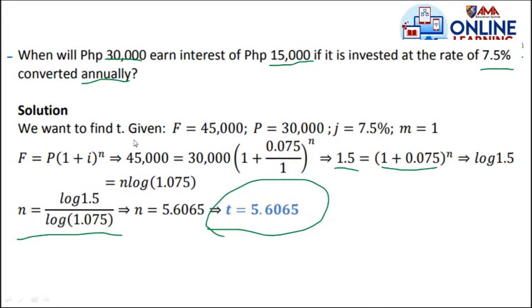We want to find t, how long. Given F equals 45,000, the future value. Before it was 30,000, then it had interest of 15,000, so the future value is 45,000. The principal is 30,000. Interest is 7.5%, compounded annually, M equals 1. So by using our formula, future value equals P times 1 plus i raised to n.